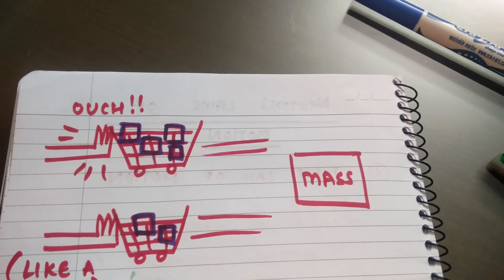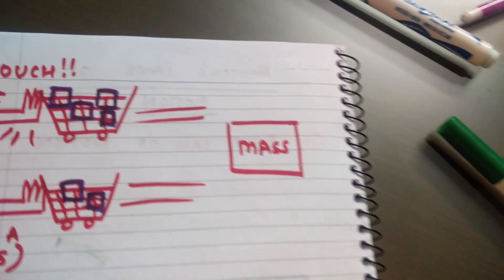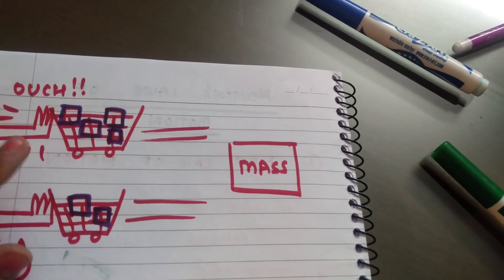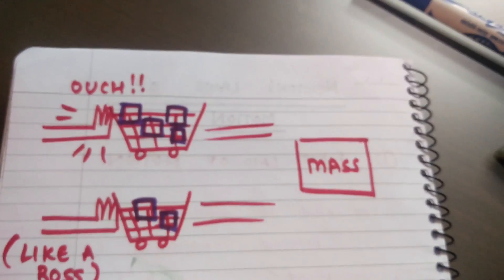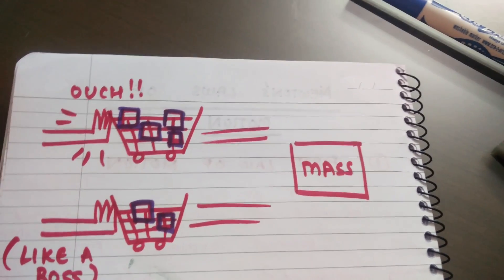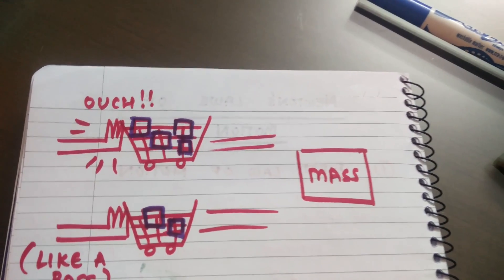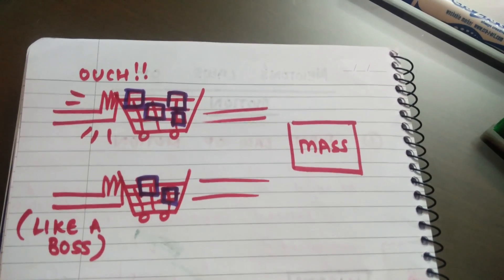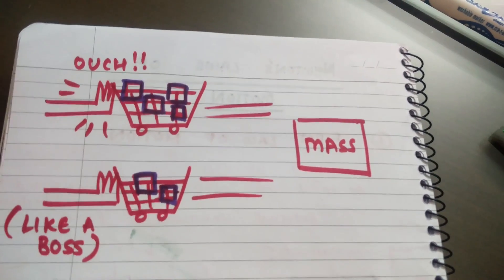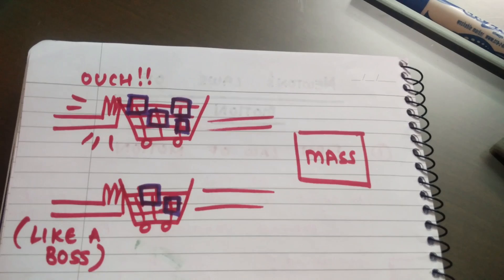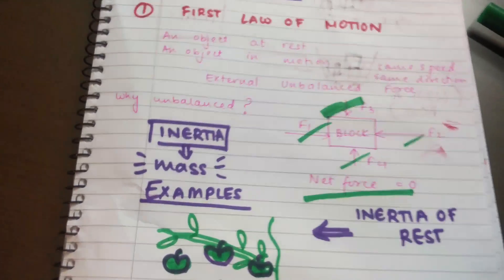Why is this? Because the fully loaded trolley has a greater mass. As a result of which, it has a greater tendency to remain in the state of motion. It has a greater tendency to remain moving with the same speed in the same direction as compared to the trolley that is mostly empty. That is why it requires a lot of force to stop the loaded trolley as compared to the mostly empty trolley, which can be stopped quite easily.